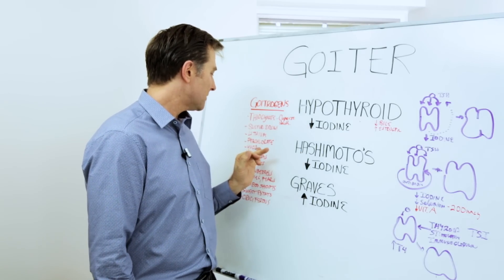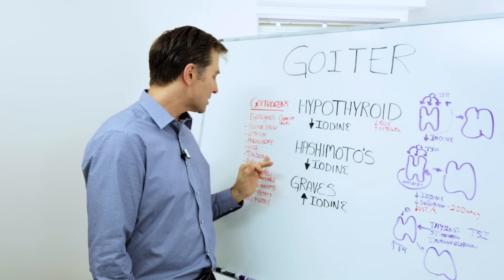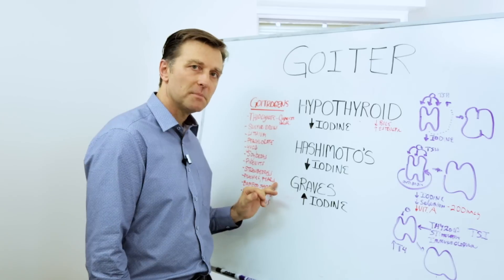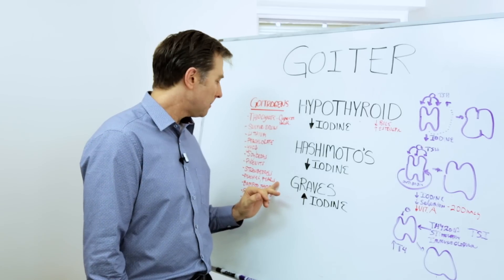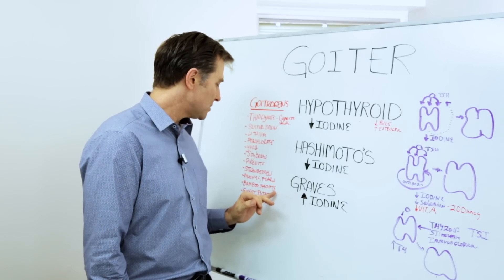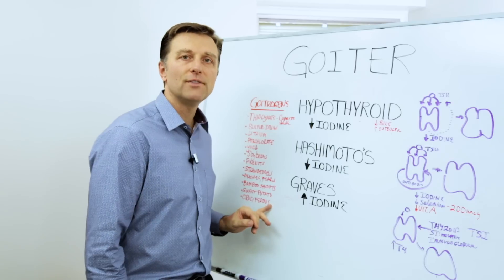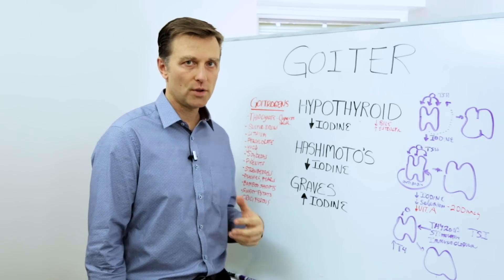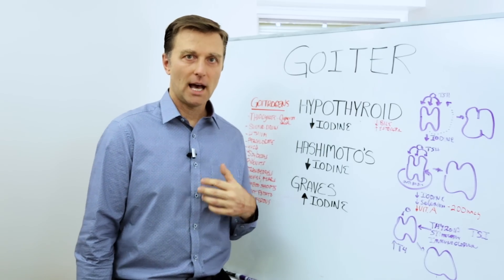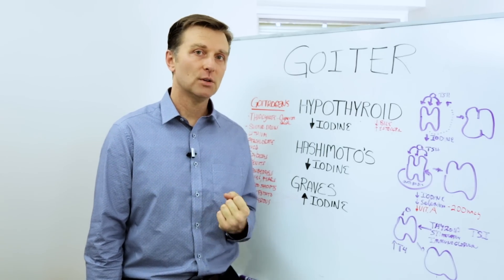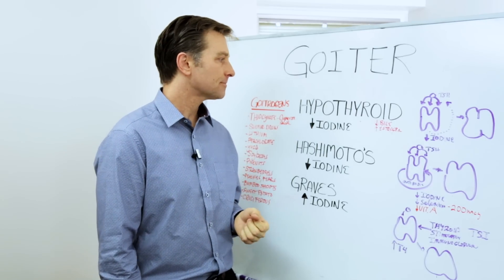Also, different foods like yucca, soybean, pine nuts, strawberries, peaches, pears, bamboo shoots, sweet potato, and cruciferous vegetables all have the capacity to deplete you of iodine.